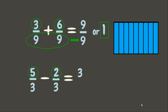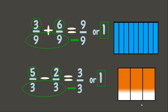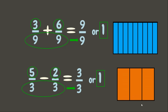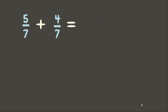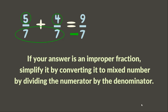Another example: five-thirds minus two-thirds. Five minus two is three; copy the denominator three — that is also equivalent to one. Now let's try: five-sevenths plus four-sevenths. Five plus four equals nine; copy the denominator seven. Since our answer is an improper fraction, we need to convert it into a mixed number by dividing nine by seven.